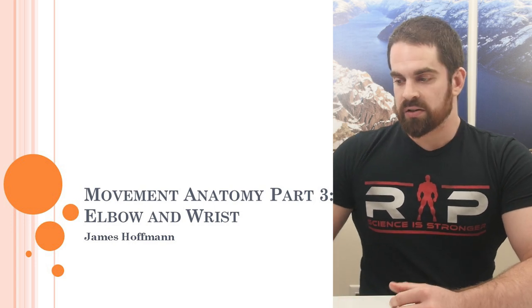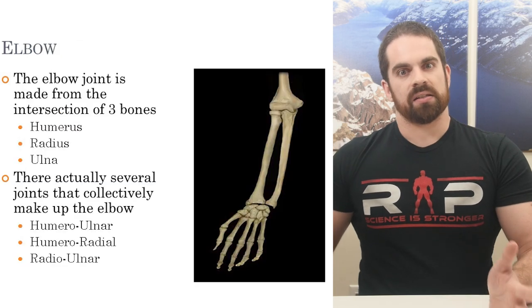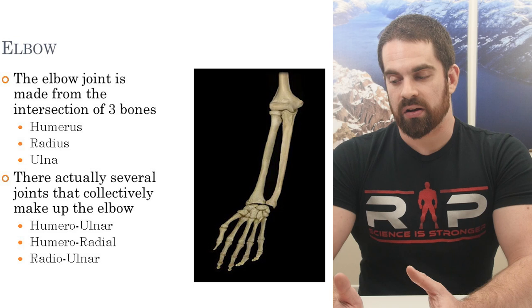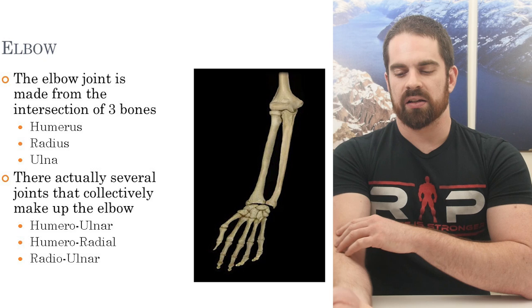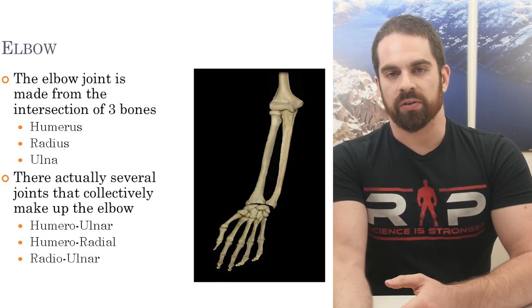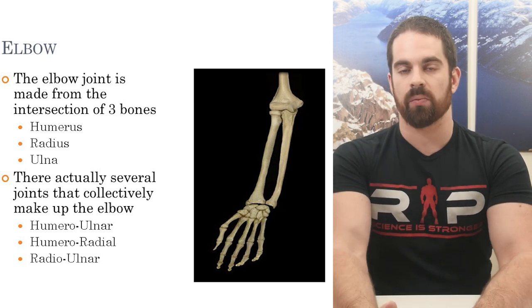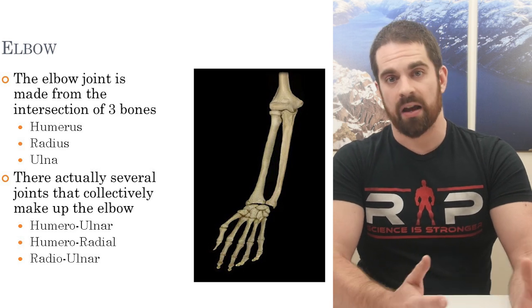So let's get started. Today we're going to talk about the elbow, the wrist and hand, and then I'll give you some examples. The elbow is actually a conglomerate of three bones: the humerus, which is the big meaty arm bone up top; the radius, a smaller bone in the forearm on the thumb side; and the ulna, another forearm bone on the pinky finger side. The elbow is essentially the interaction of those three bones.